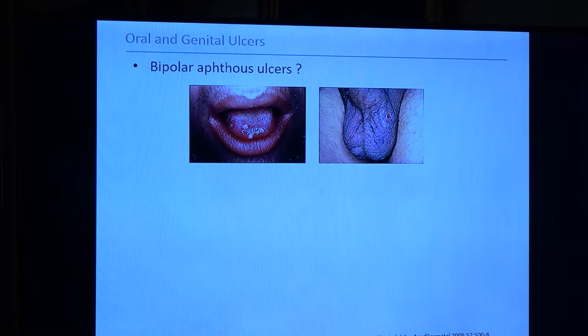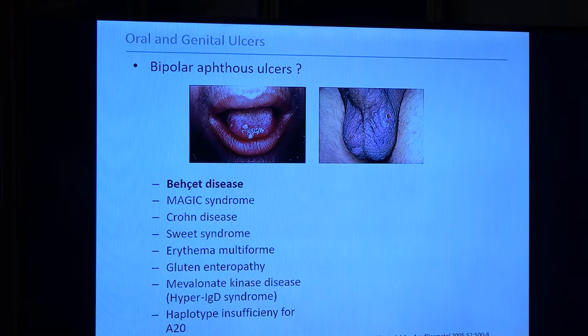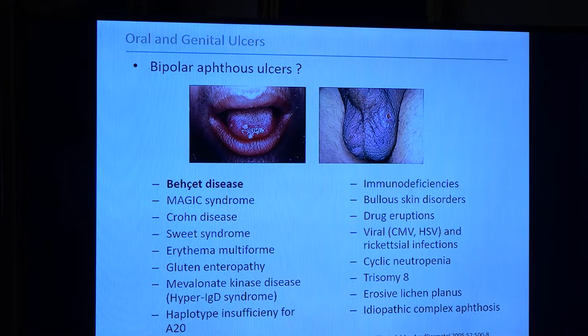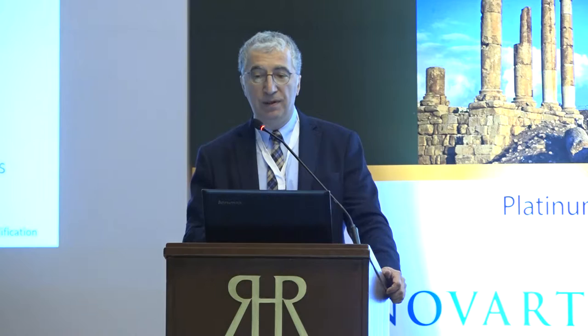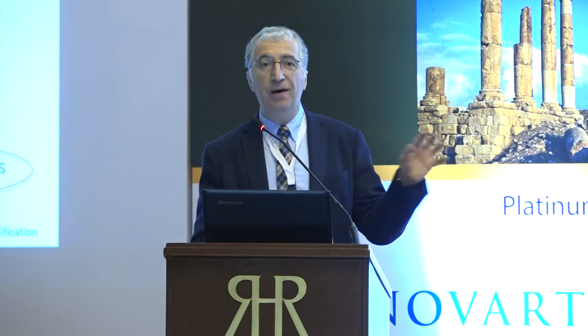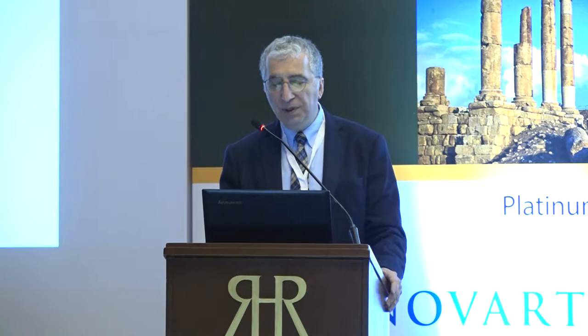Another issue is the definition of bipolar aphthosis, which could be the sign for classification in the new criteria. We have to remember there are conditions that can develop bipolar aphthosis — oral and genital ulcers — besides Behçet's disease: MAGIC syndrome, Crohn's disease, Sweet syndrome, erythema multiforme, mevalonate kinase deficiency, haploinsufficiency for A20, immunodeficiencies, viral infections, drug eruptions, and especially idiopathic complex aphthosis, which is quite common in the Western world. Those individuals will not develop any other manifestations and are not Behçet's, but unfortunately most are diagnosed and treated as Behçet's patients.